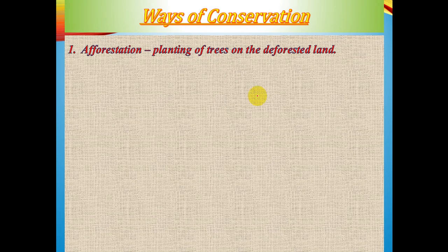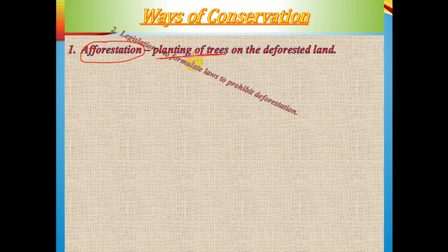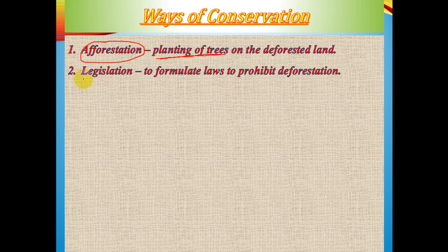The ways of conservation of forests are as follows. First is afforestation — planting trees on degraded or deforested land. Second is legislation — formulating laws to stop and prohibit deforestation, since many people continue deforesting for their own benefit despite afforestation policies.